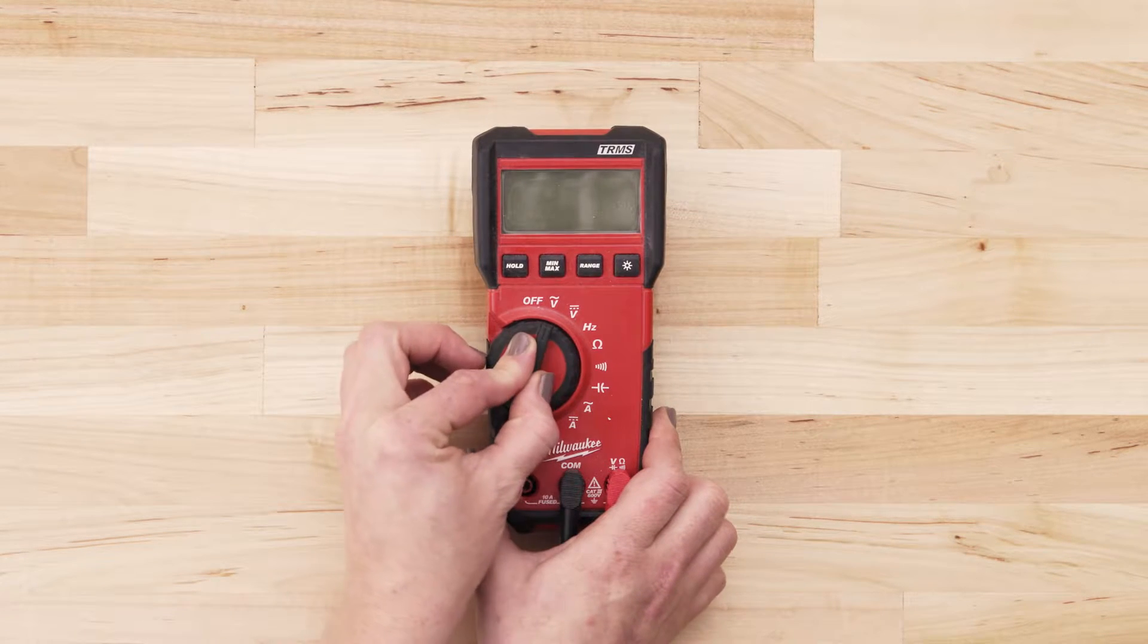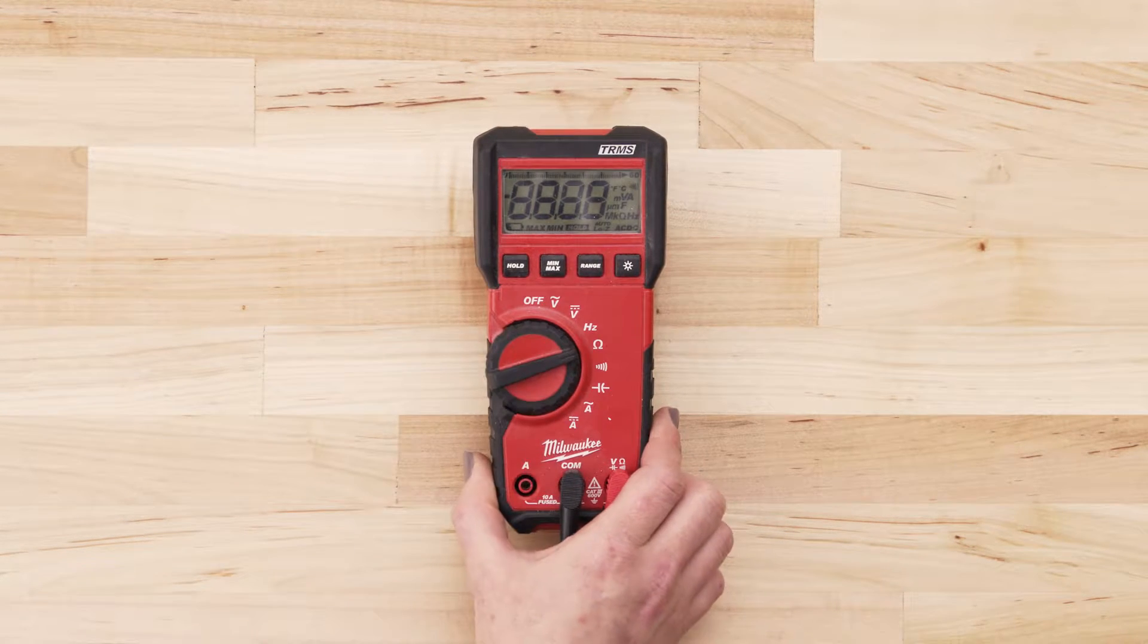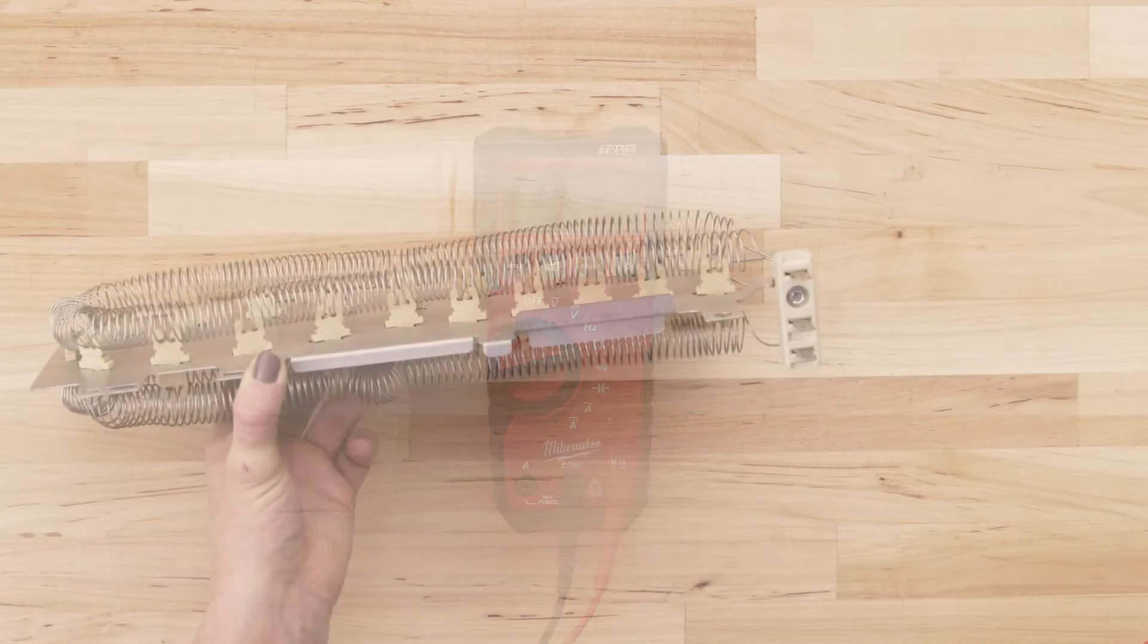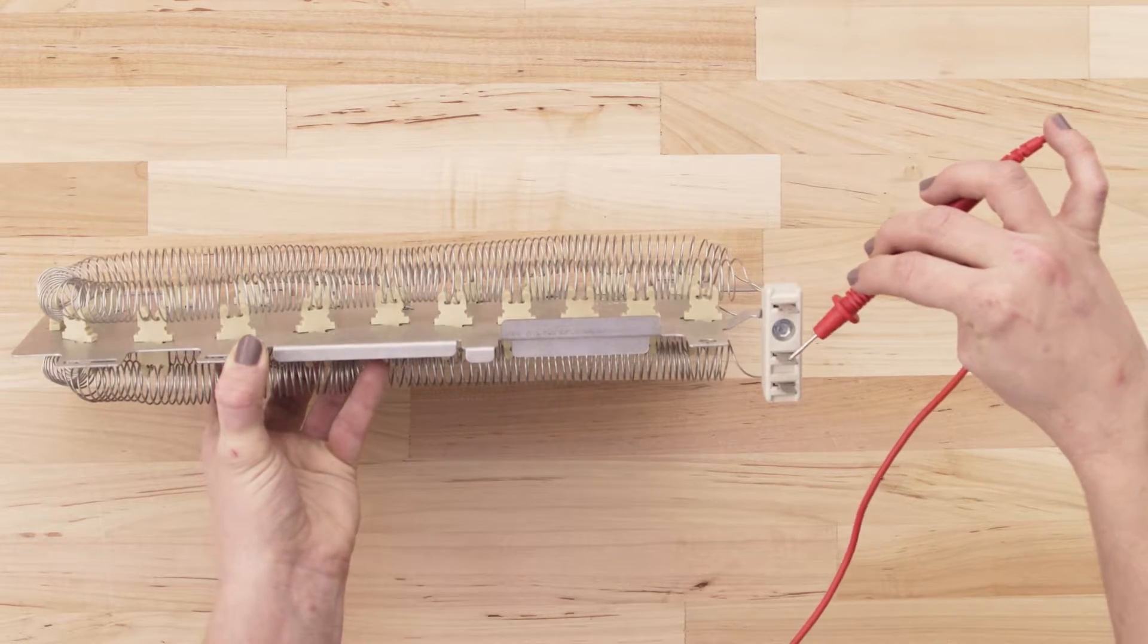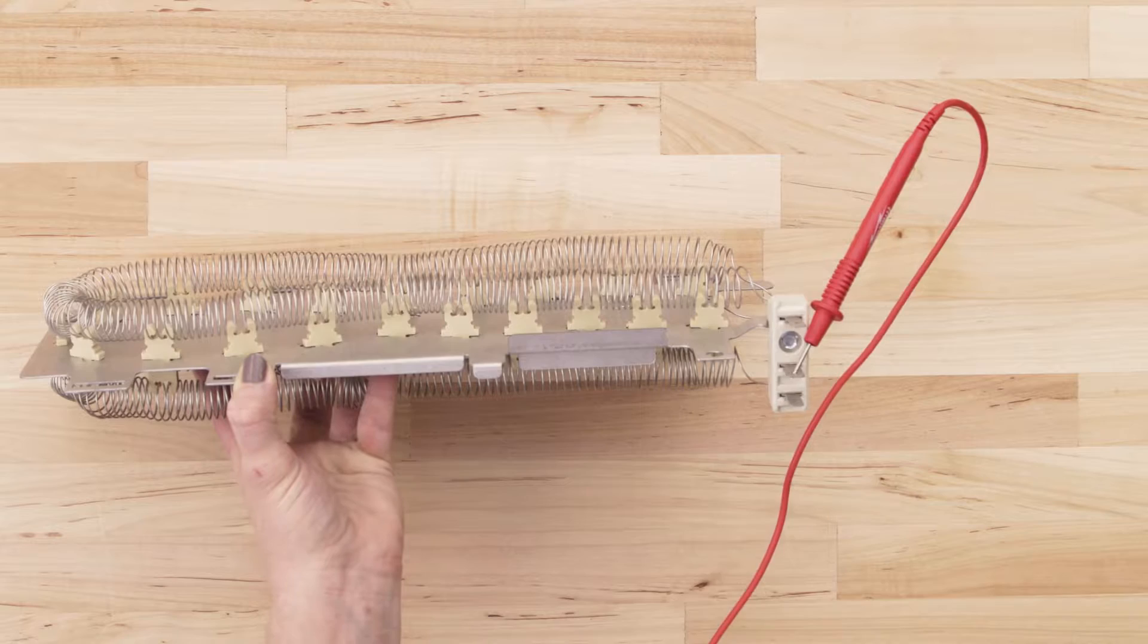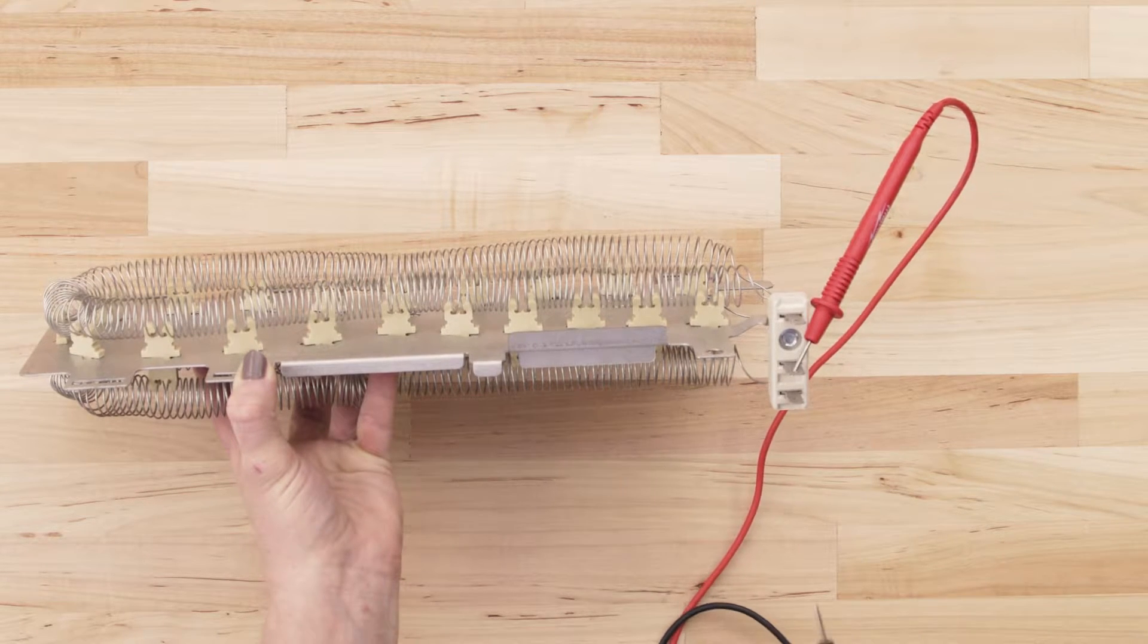If you're using a digital multimeter, also set the dial to the lowest ohms of resistance. To test for continuity, take the probe from the multimeter and touch it to one of the terminals. Now touch the second probe to the remaining terminal.